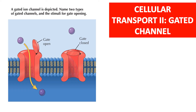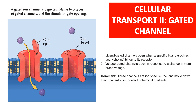Gated channels: name two types of gated channel and their stimuli for gate opening. Number one is a ligand-gated channel, which opens when a specific ligand such as acetylcholine binds to its receptor. Number two is a voltage-gated channel, which opens in response to a change in membrane voltage. These channels are ion-specific; the ion moves down its concentration or electrochemical gradient.